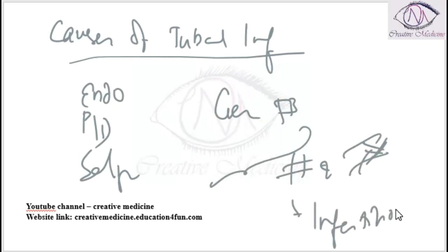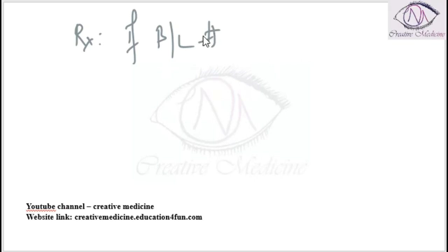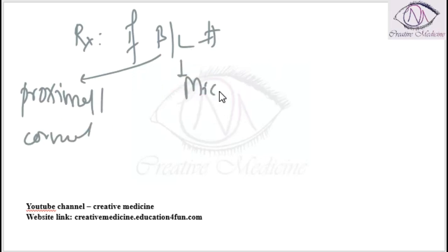In tubal infertility, treatment is done only if there is bilateral tube blockade. This bilateral blockade of the tube can be bilateral proximal block, bilateral distal block, or mid-segmental block. The treatment differs with each of these.